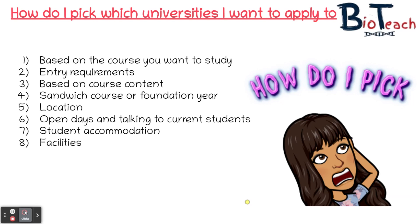Facilities are also really crucial. Check these out before you apply. For example, if you're applying for a sports science course, make sure they have access to a good gym, training equipment and facilities. If you're applying to a science-based course, check out their labs and the equipment available. Have they got all the crucial lab apparatus? Are there societies you can join to widen your network? Are there good sporting clubs if that's something important to you?